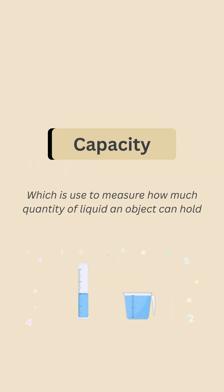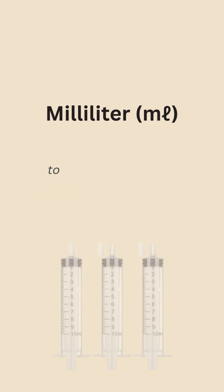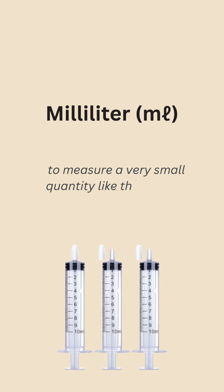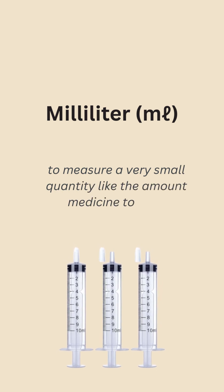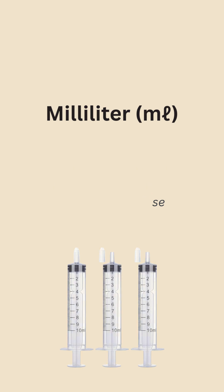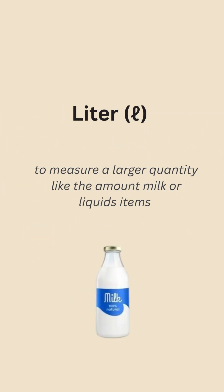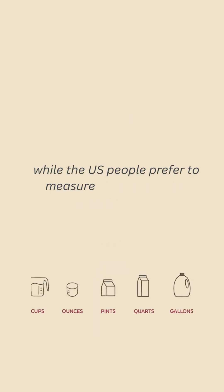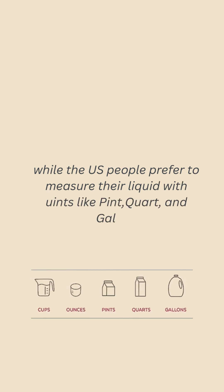The next measurement unit is capacity, which is used to measure how much liquid an object can hold in the metric system. Capacity is measured in milliliters (ml) to measure a very small quantity, like the amount of medicine to dose. Liters (l) are used to measure a larger quantity, like the amount of milk or other liquid items. The U.S. prefers to measure liquids with units like pint, quart, and gallon.